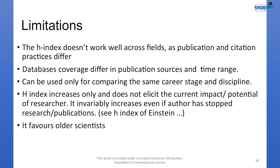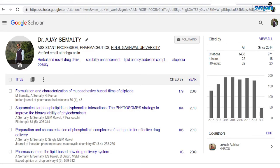Limitations of H-index: it does not work well across fields as publication and citation practices differ; database coverage differs in publication sources and time range; it can only be used for comparing the same career stage and discipline. H-index only increases — unlike impact factor — so it does not give a clear picture of the current potential of a researcher. For example, Einstein's H-index is still increasing even though he is no longer working. It also favours only senior researchers.